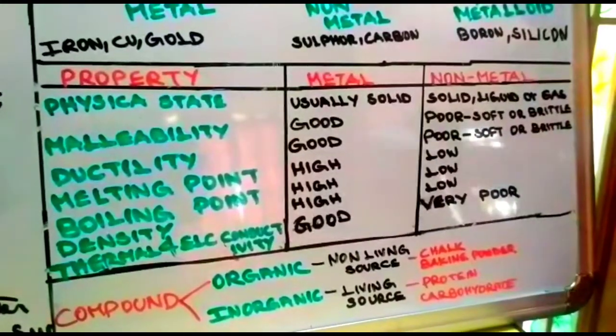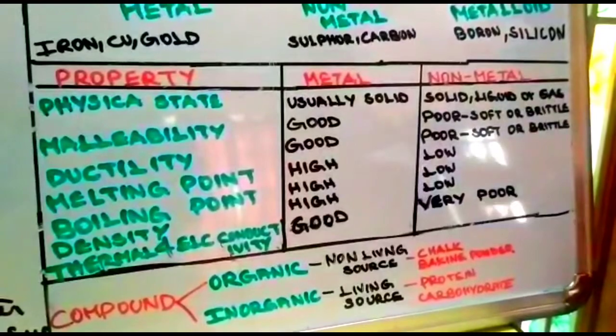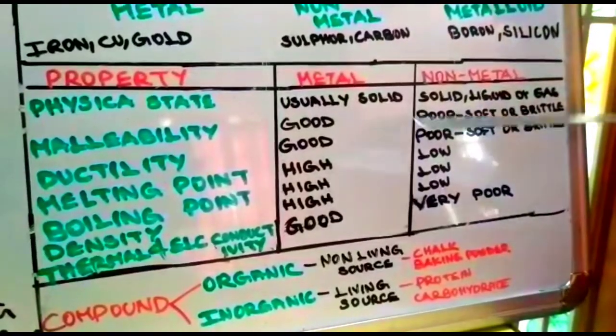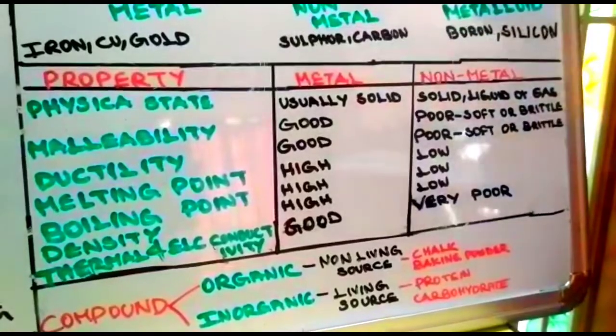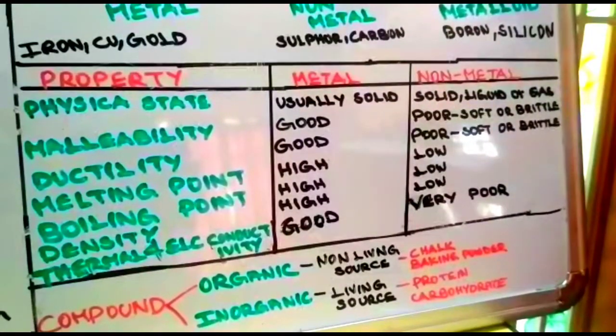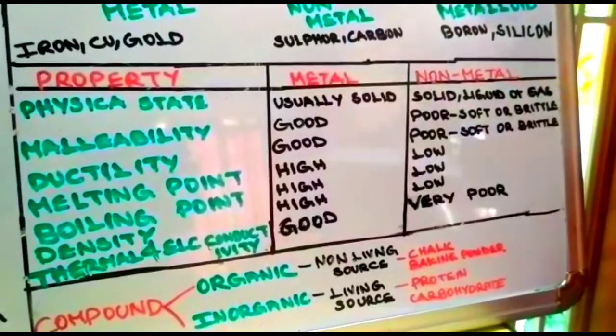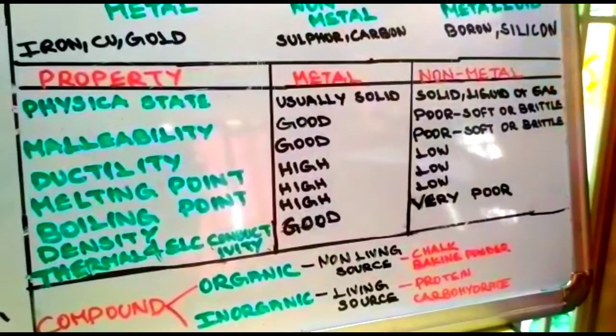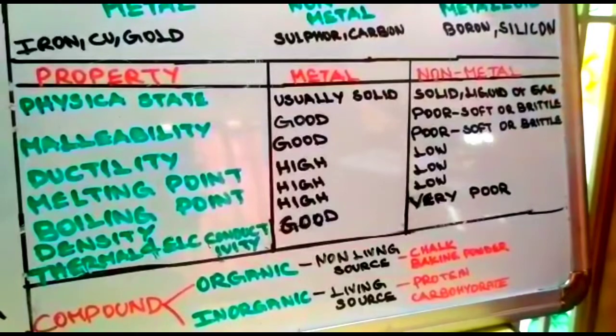What are the uses of metals? Metals can be used in making bridges and engines because iron is used. Silver and gold are used for making jewels. Mercury is used in thermometers and aluminum is used in electrical wires.